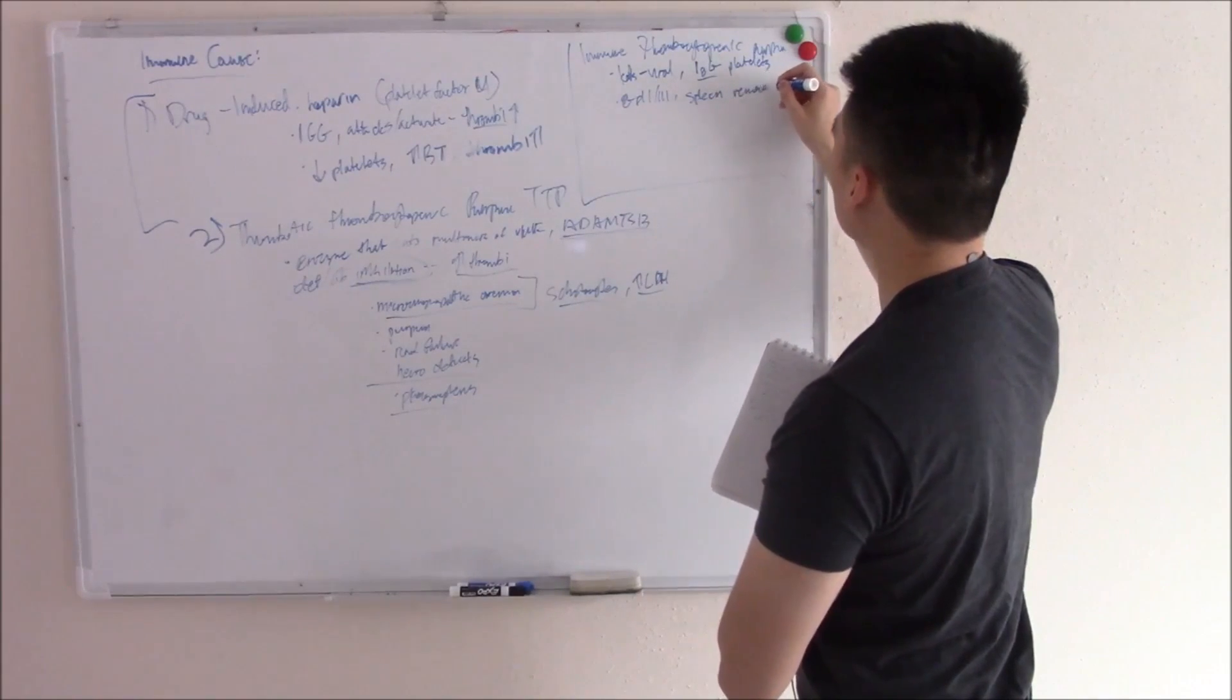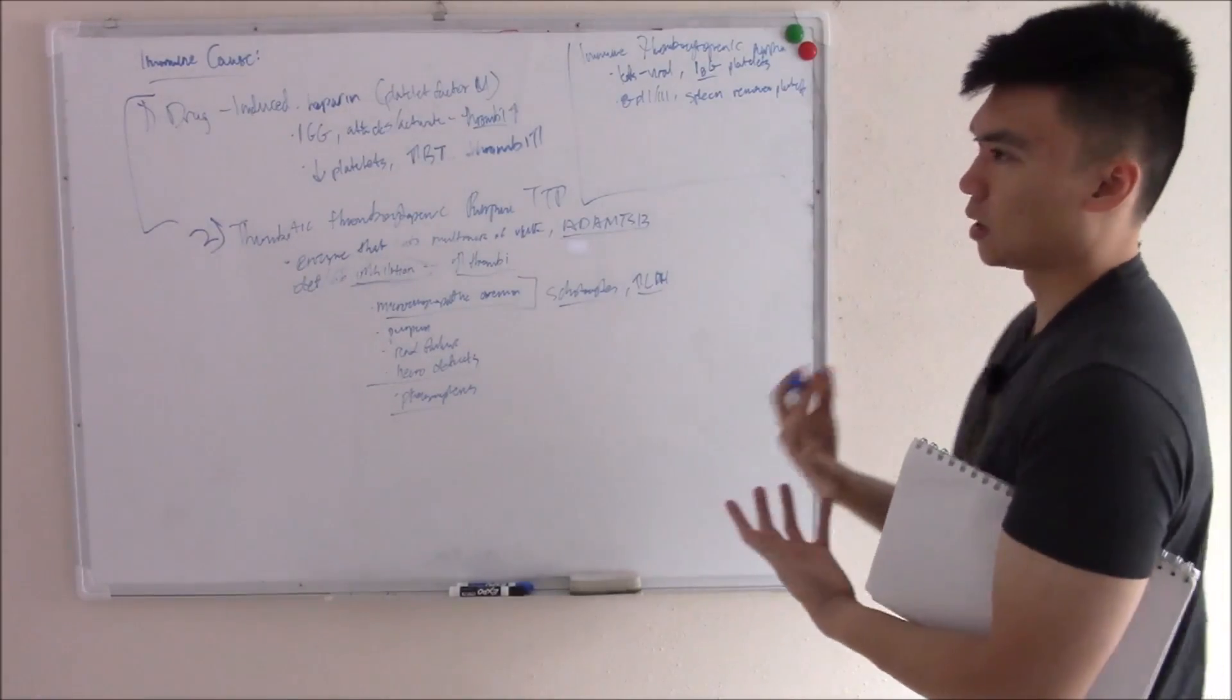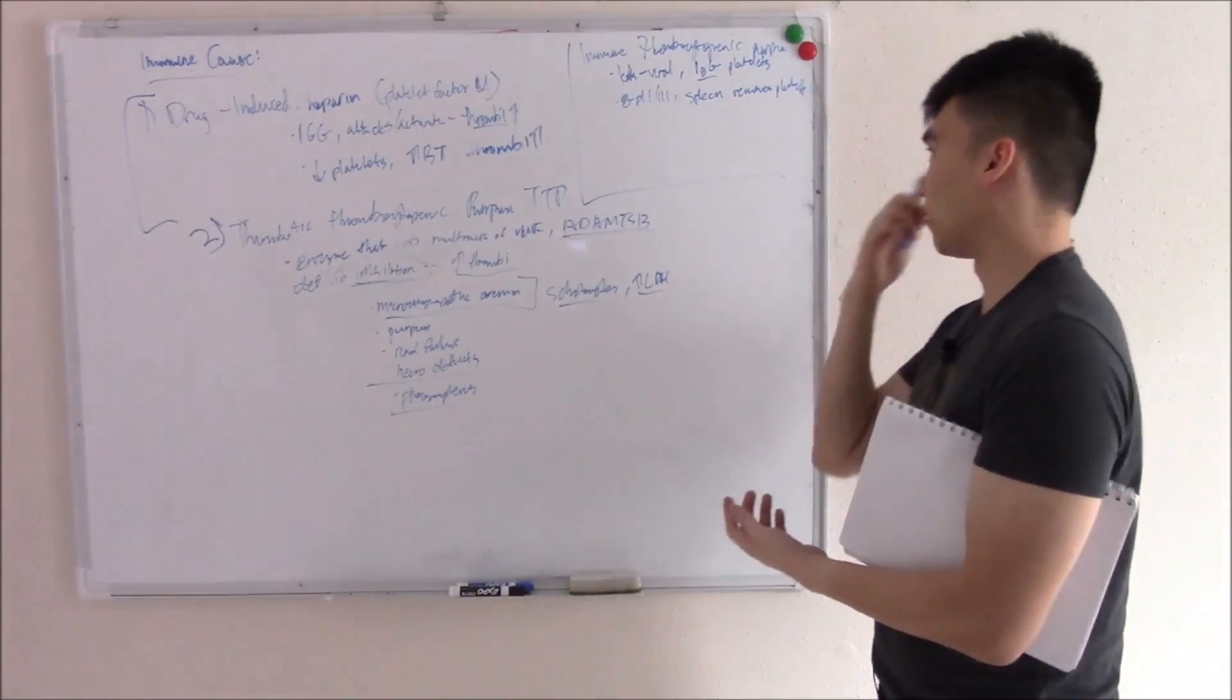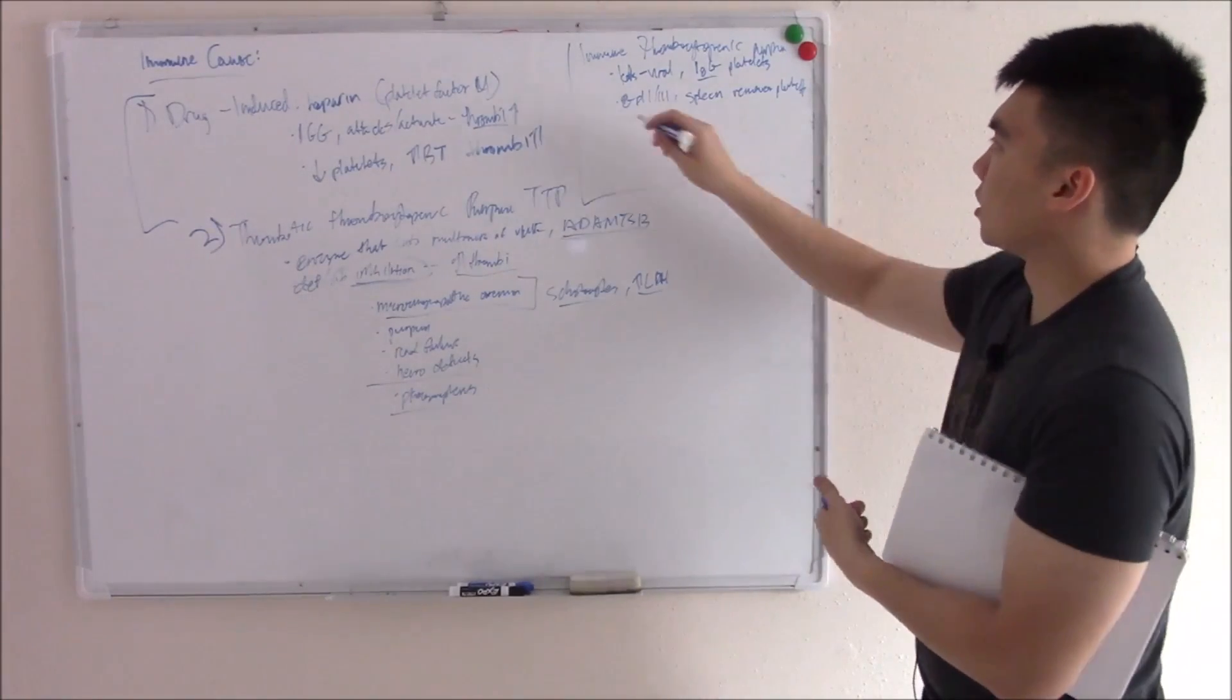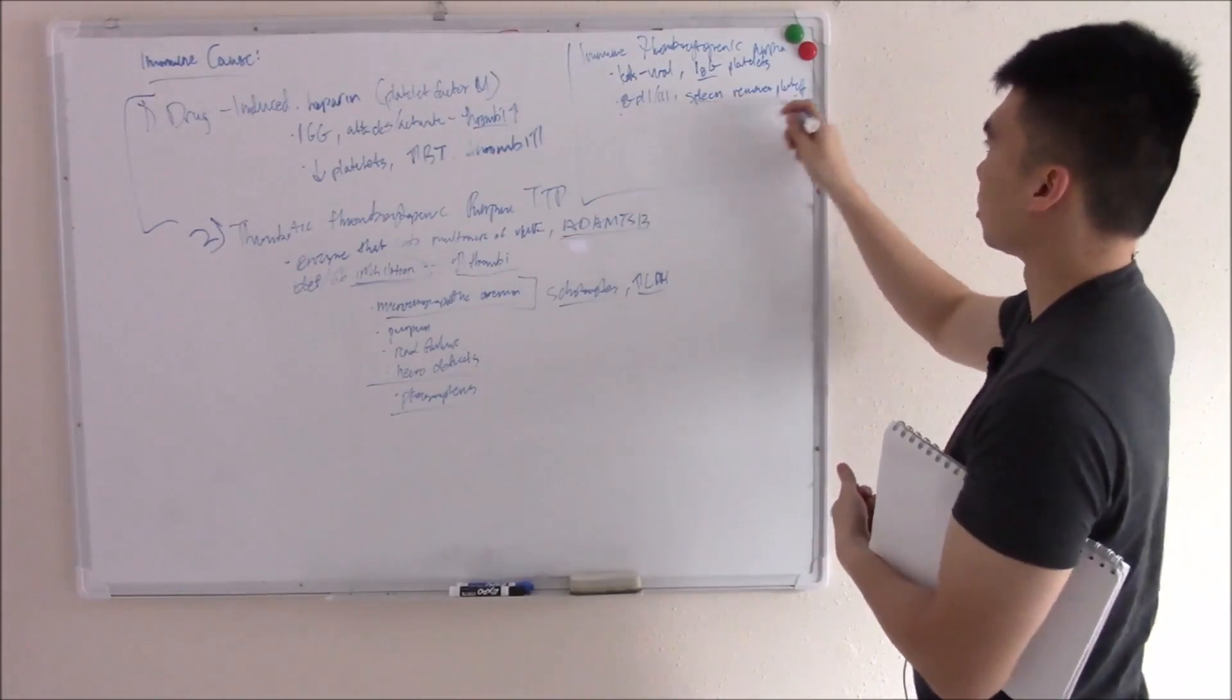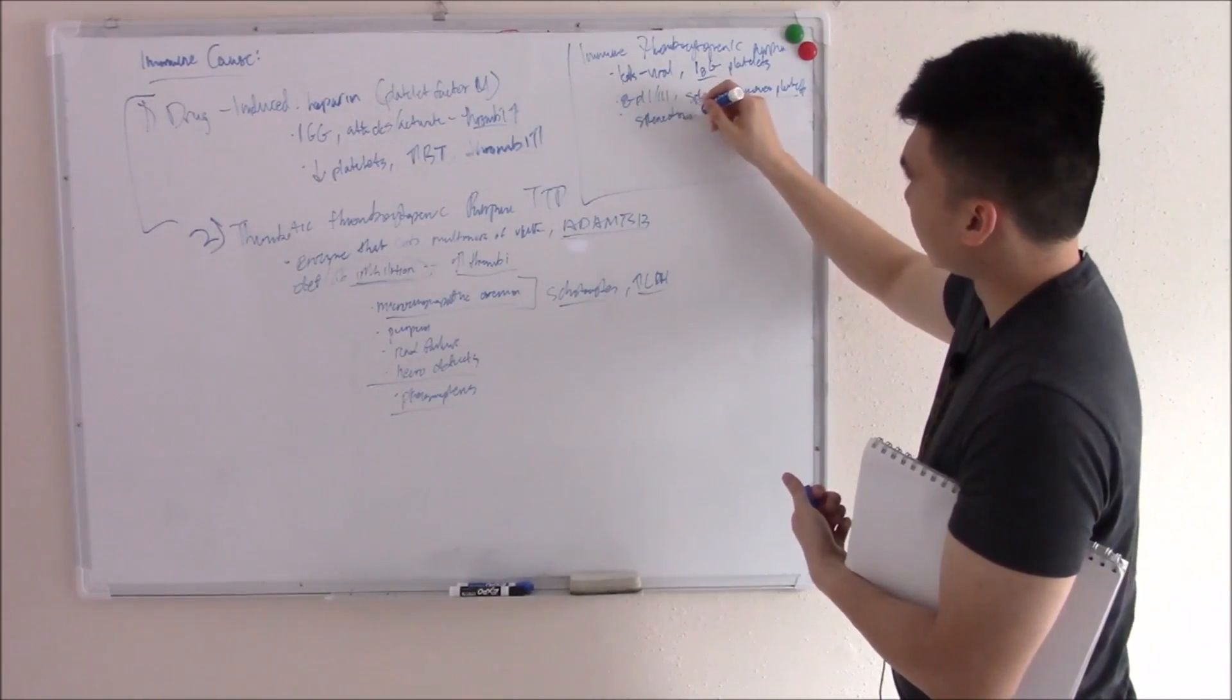Usually self-limited, you can use steroids if need be or if severe. And if it's really refractory or you just can't seem to get rid of it, then you can do a splenectomy. Because again, your spleen removes your platelets. So splenectomy would be curative, but that's on a very severe end.